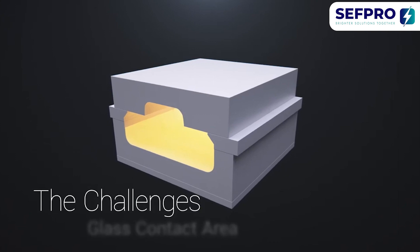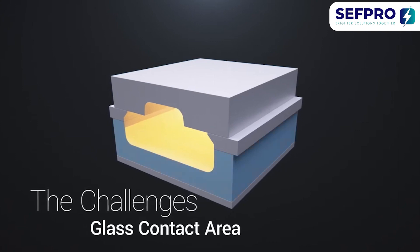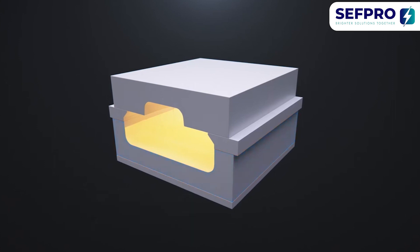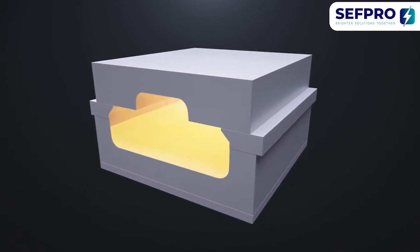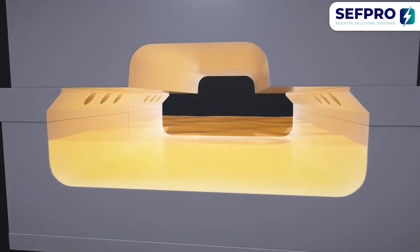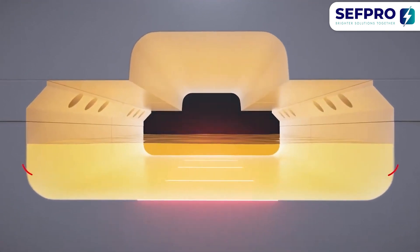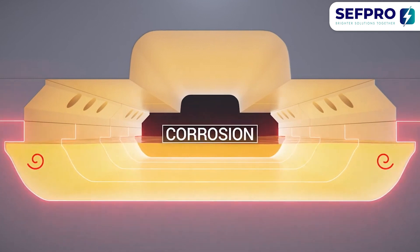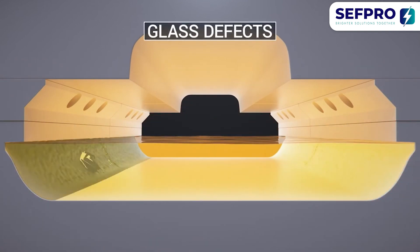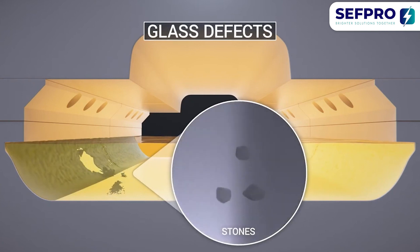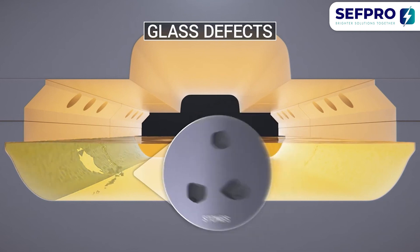Challenges in the glass contact area: defects in the glass and refractory corrosion are the two major challenges faced in the glass contact portion of the feeder. Corrosion will significantly impact your furnace campaign, and glass defects generated by corrosion will affect the overall feeder performance if not fully digested prior to the glass forming section.